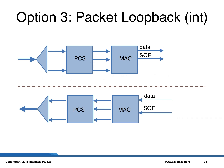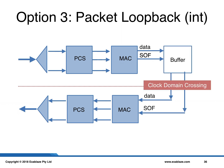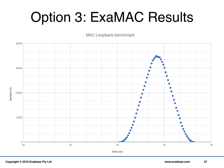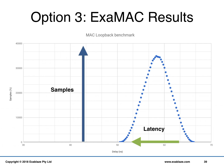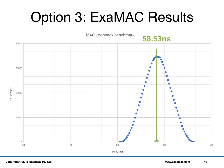An alternative methodology is to use an internal loopback rather than an external loopback. In this case, received packets are buffered into an internal buffer, allowing them to safely cross the clock domain. An external test harness measures the system's performance accurately. If you're interested in further details, I encourage you to look at my previous videos on developing a reliable methodology for nanosecond-scale network measurement. This measurement consisted of 10 million samples. The median result was 58.53 nanoseconds and the minimum was 50.53 nanoseconds.